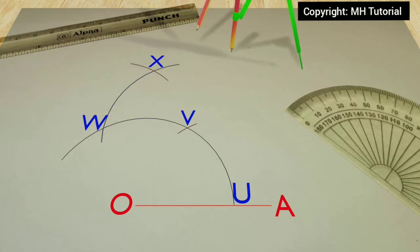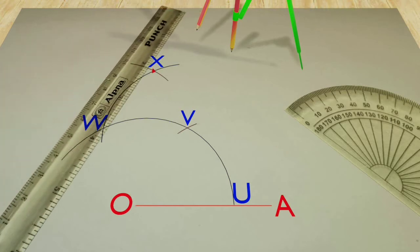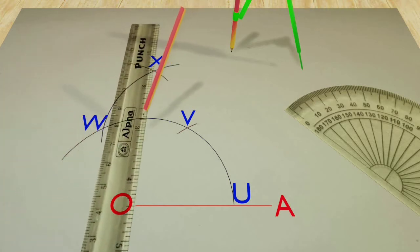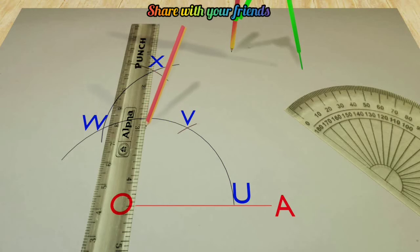Then align the ruler along point O and point X. A small line is drawn to get point of intersection against the first circle arc.